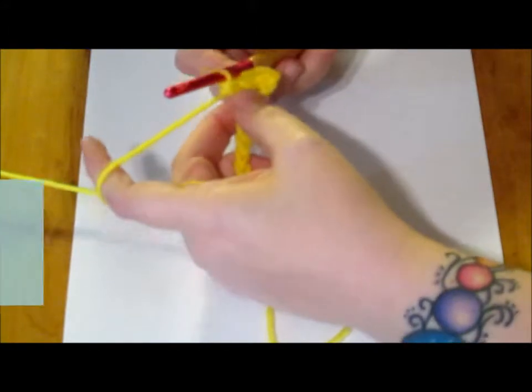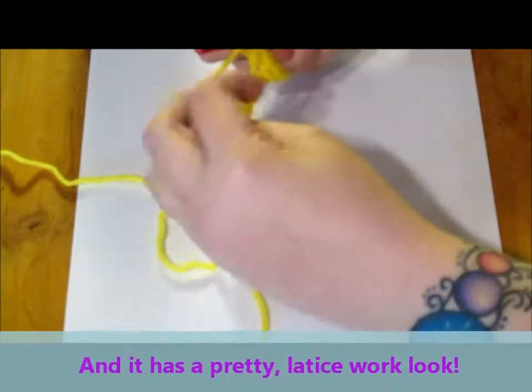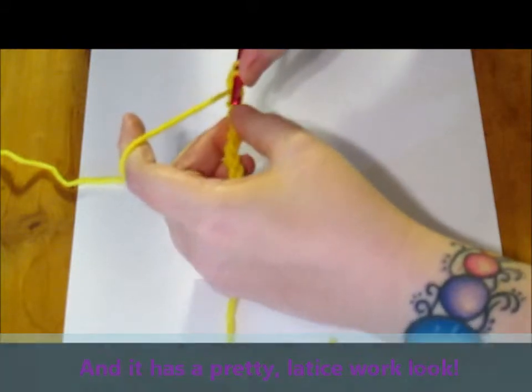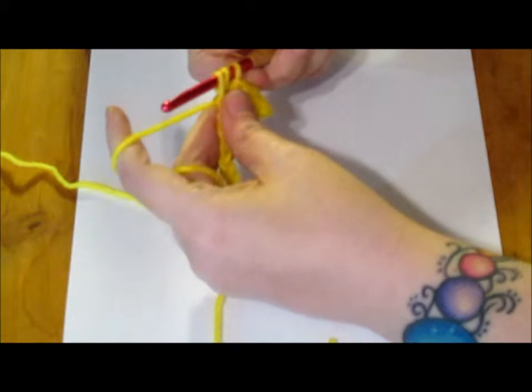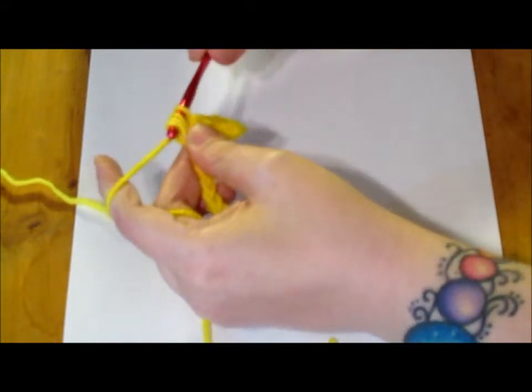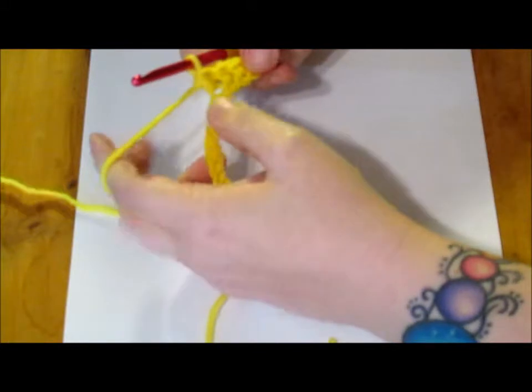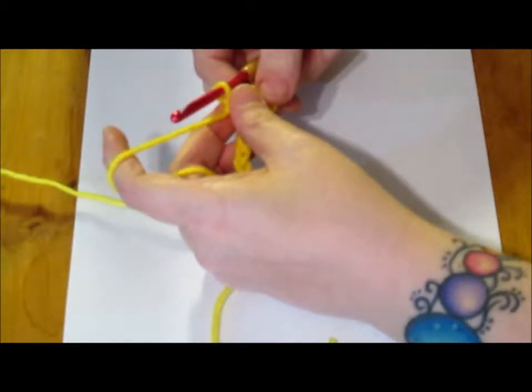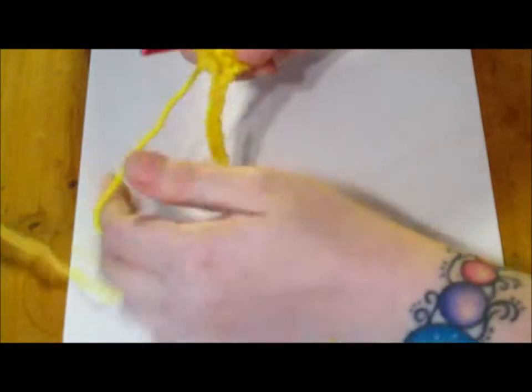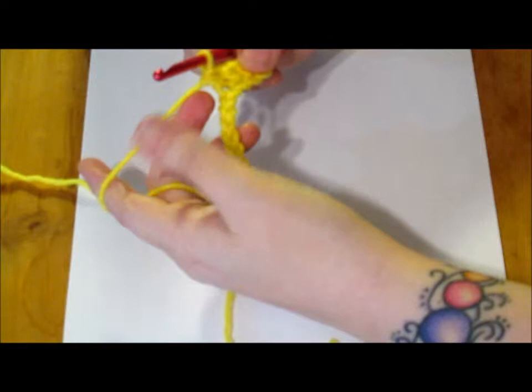Now, I'm going to show you one more time. So, hold that loop, yarn over your hook one time, slip through the next stitch, yarn over again and pull through that stitch, then yarn over and pull through all three loops. Now, you have half double crochet. That's the crochet stitch that we're going to be using on these sleeping mats for the homeless. But, I'm going to show you one more stitch.